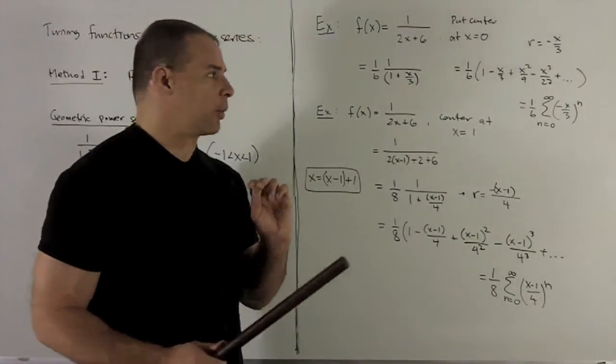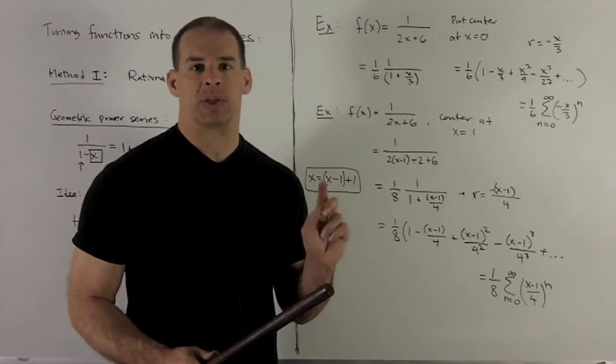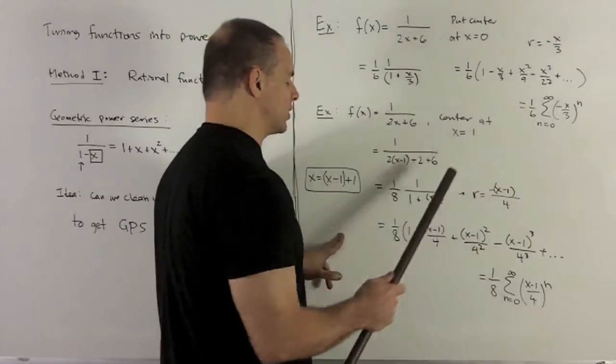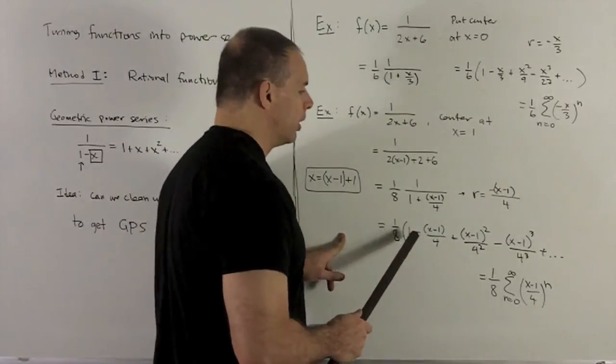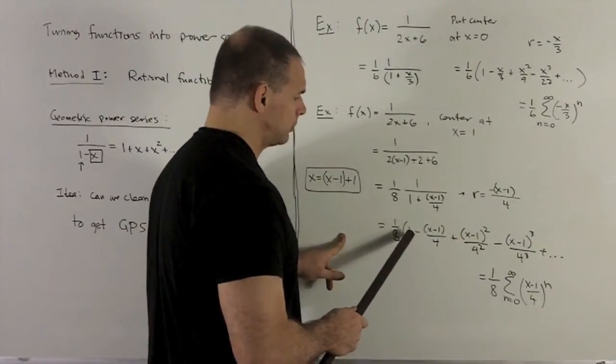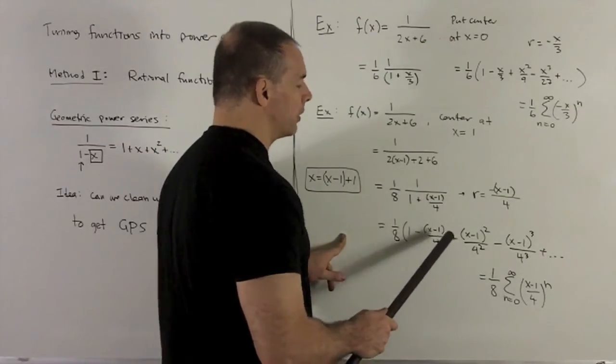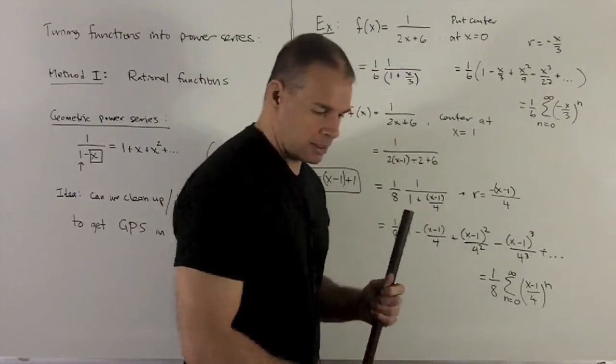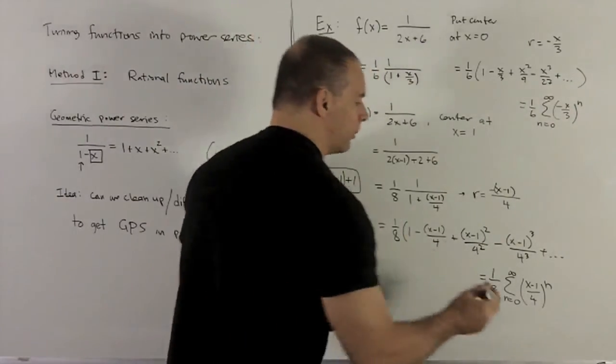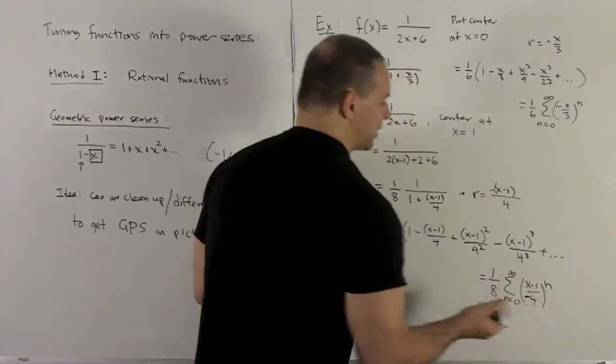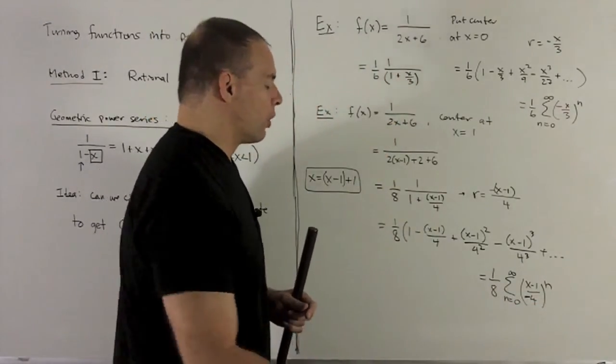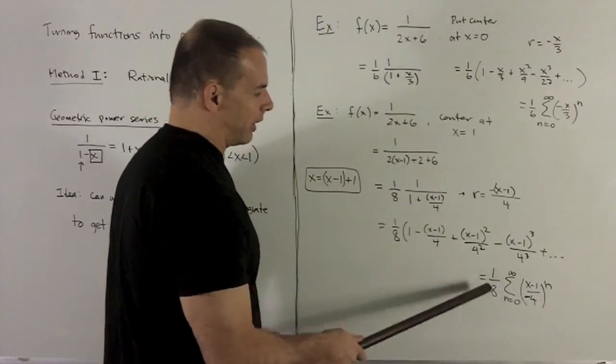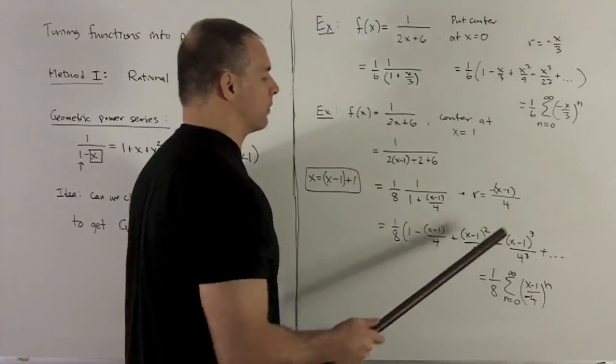Okay, we write out what we're going to get. It's going to be 1/8, then 1 plus box, plus box squared, plus box cubed. And we just stick this into the boxes. So what are we going to get? We're going to have 1 minus x minus 1 over 4, plus x minus 1 squared over 4 squared, and so on. And then if I put it in closed form, okay, don't forget your minus sign. I'm going to have x minus 1 over minus 4 raised to the nth power. Then a 1/8 out in front, and then sum going from 0 to infinity.